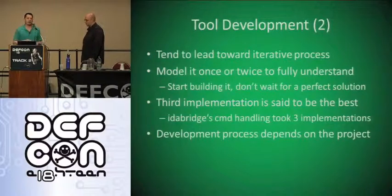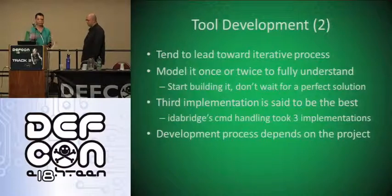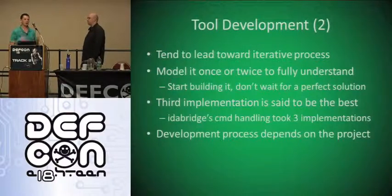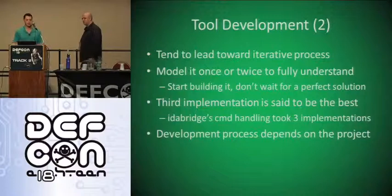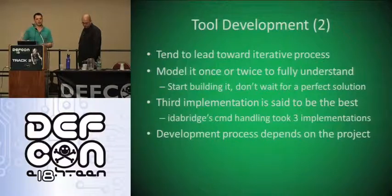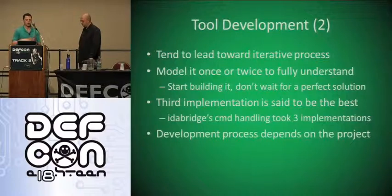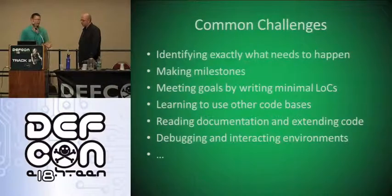So we tend to lean towards a more iterative process. We write a basic tool, get an idea of what went wrong and what went right, then iterate and create a new iteration with more functionality or features. The idea is to model it once or twice, get a good grasp of what's going to happen, and then start working on what might be a final product. You're never going to come up with the perfect solution the first time, and the more time you spend thinking about what you're going to do, you're just going to burn yourself out. Generally the third implementation is considered to be the best. In the case of IDA Bridge, it took three times to get a working command line interface that would interact with not only IDA Bridge but also any other tools we'd want to connect to it.